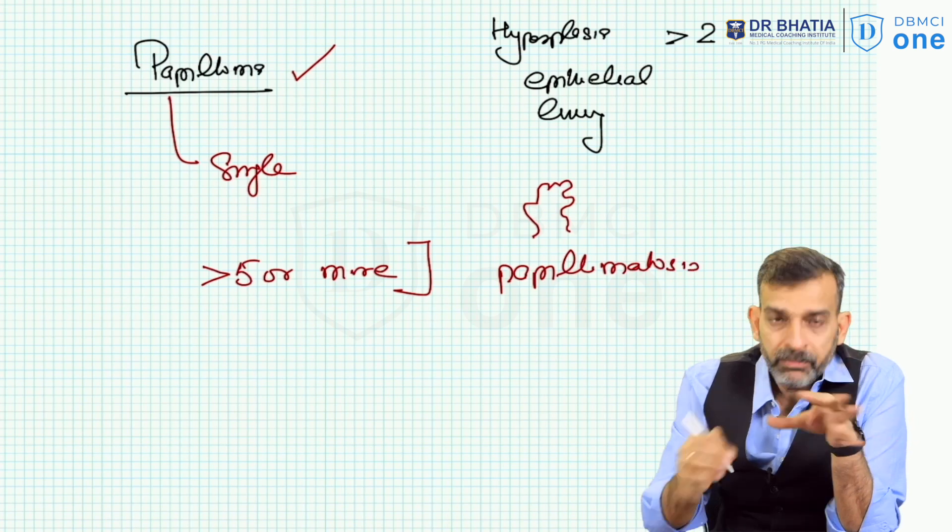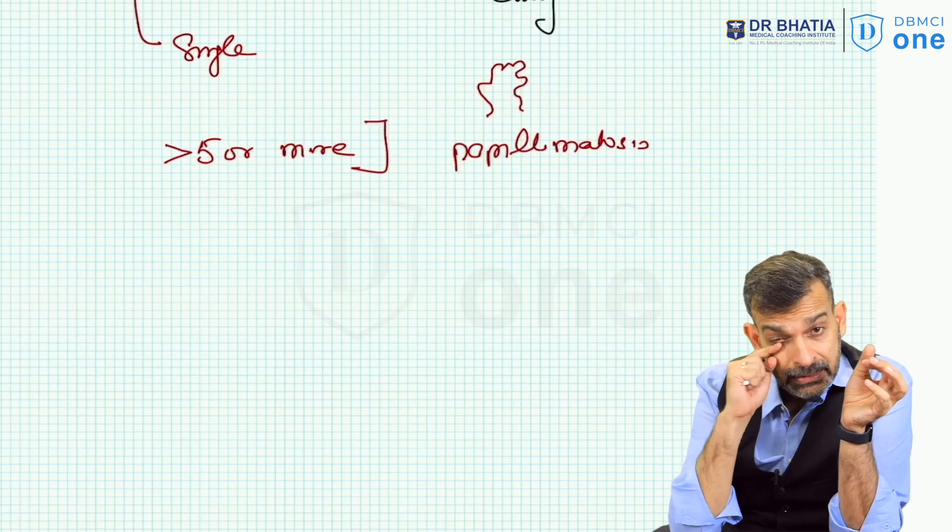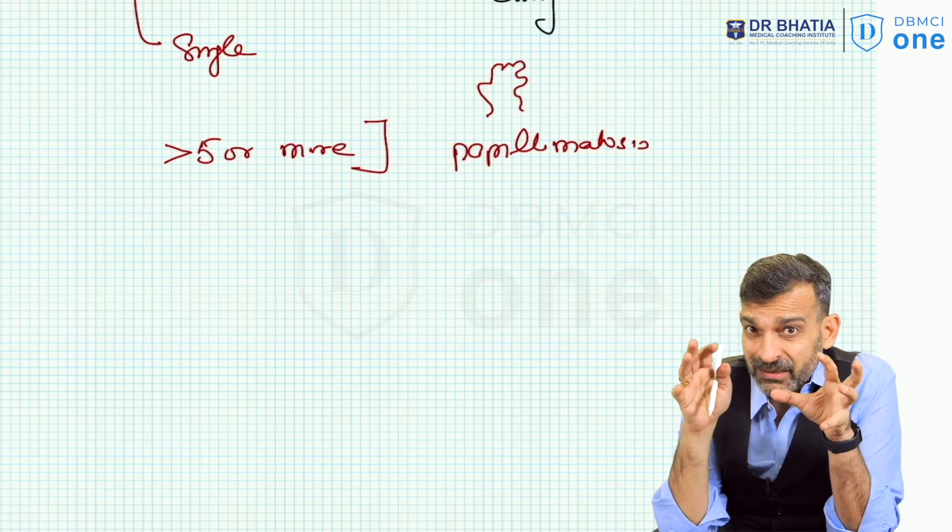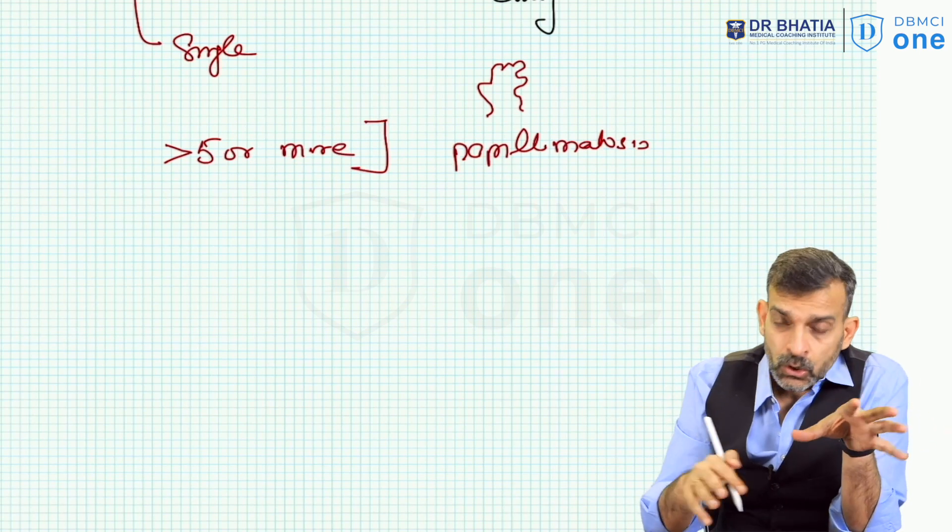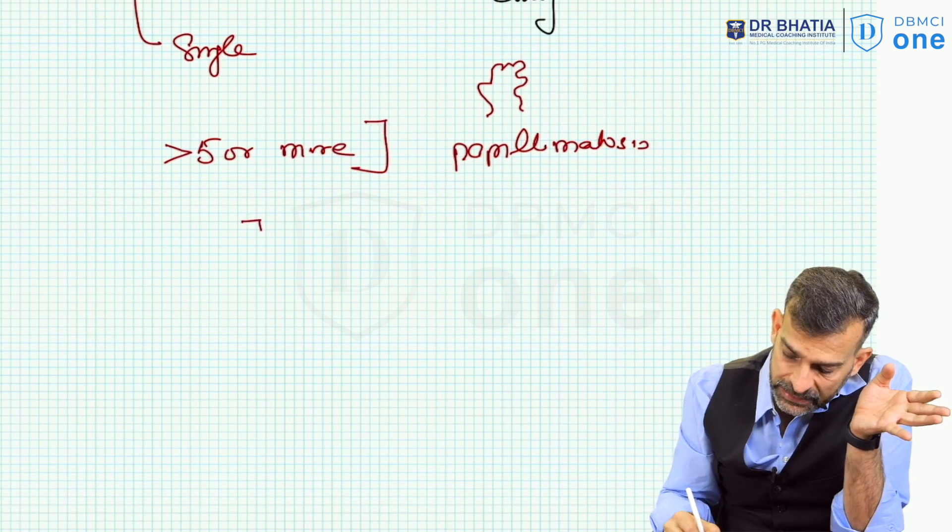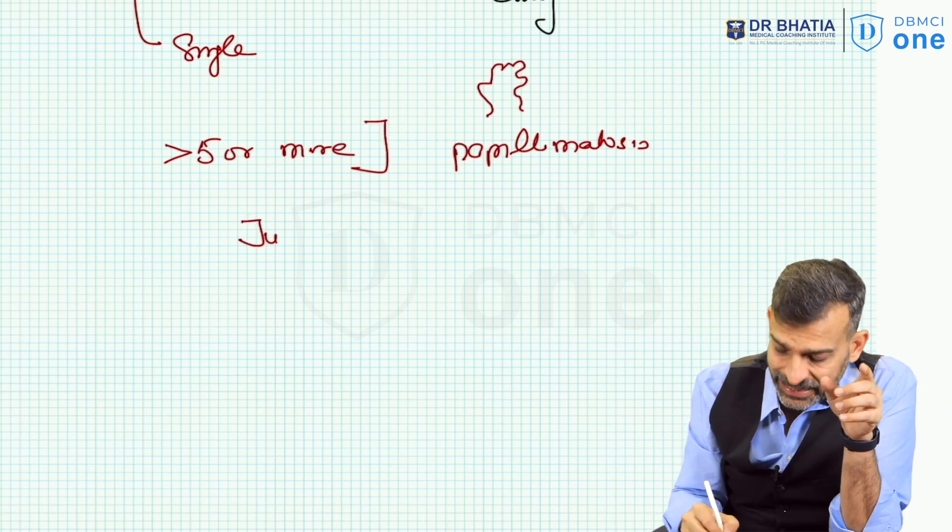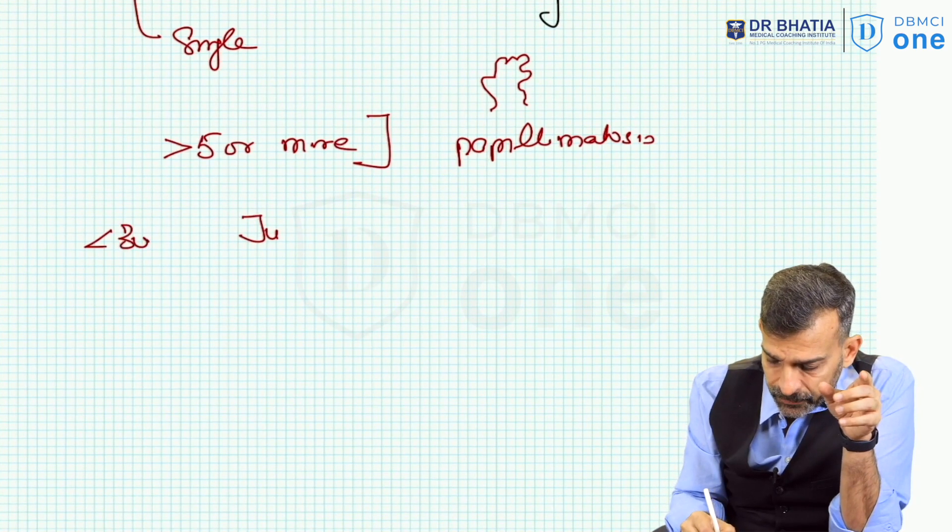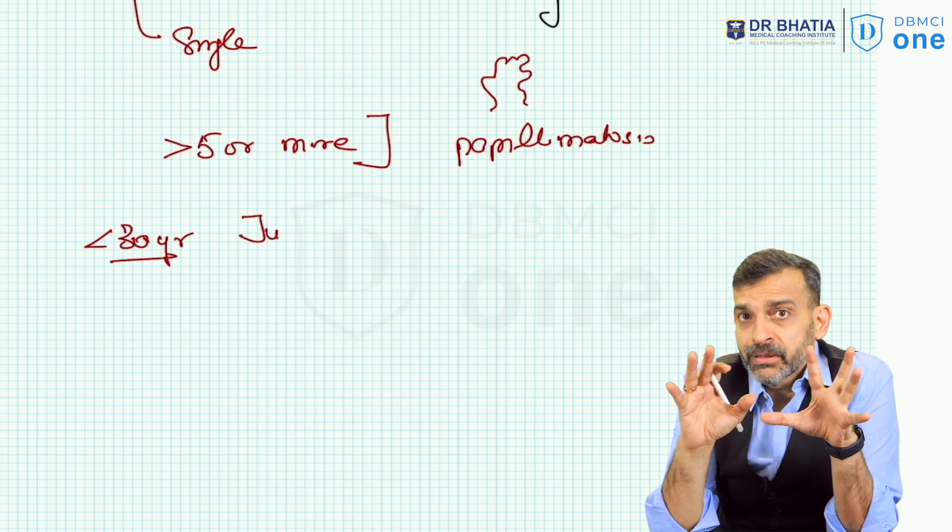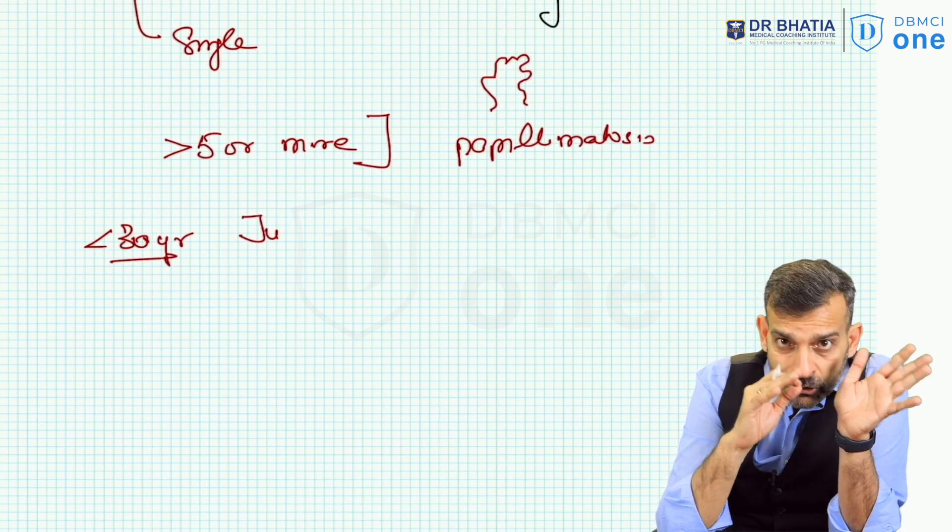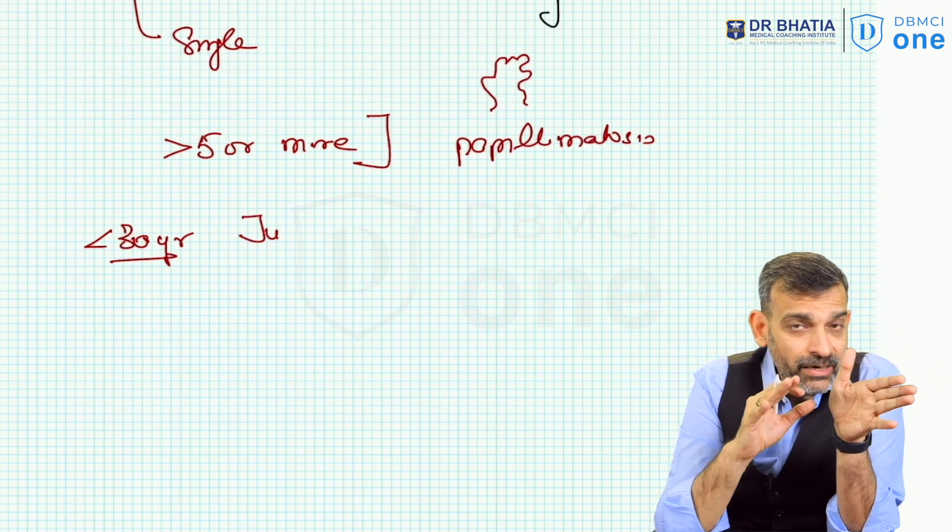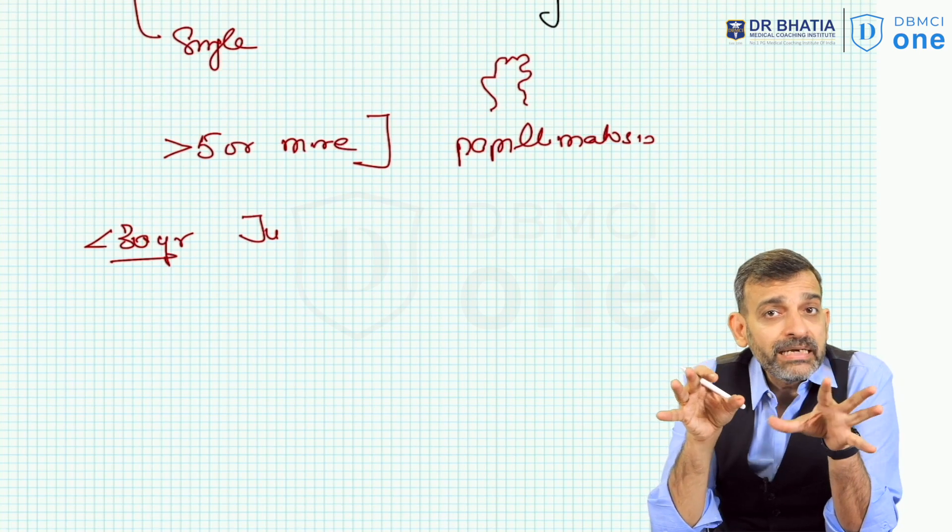It is called papillomatosis, and if this condition having 5 or more polyp-like growth in one or multiple ducts, this can be unilateral, can be bilateral. This condition, if this is there in less than 30-year-old female, a young female, if multiple polyps are there in one duct or multiple ducts in a unilateral or bilateral breast, means papillomatosis is there in a unilateral or bilateral breast.